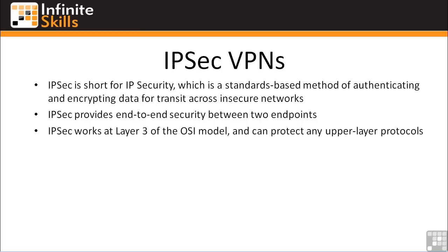About the only thing you can't encrypt with IPsec are multicasts and broadcasts, simply because IPsec acts like a router, and most routers don't forward broadcasts and multicasts anyway. There is a way to run routing protocols through a VPN tunnel — it's called GRE — but that's way beyond the scope of CCNA. We're just scratching the surface of IPsec here.